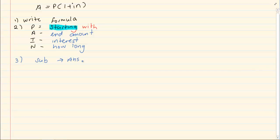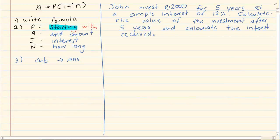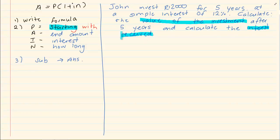Let's take the following question. John invests R12,000 for five years at a simple interest rate of 12%. Calculate the value of the investment after five years. So that is one part of the question.